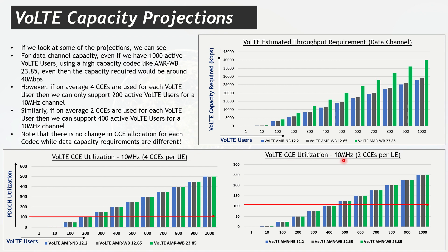If we assign only 2 CCEs per UE instead of 4, the 100% PDCCH utilization mark is pushed out to around 400 VoLTE users. This effectively doubles our PDCCH capacity, but using 2 CCEs per UE is less robust and may introduce quality issues for VoLTE.